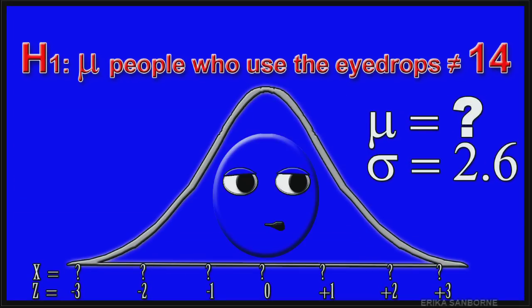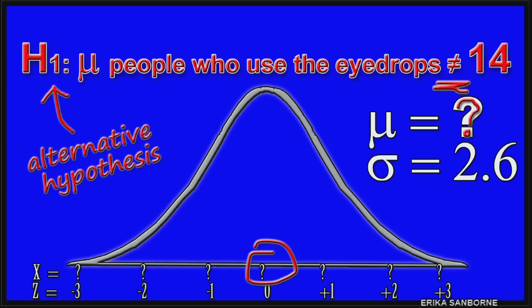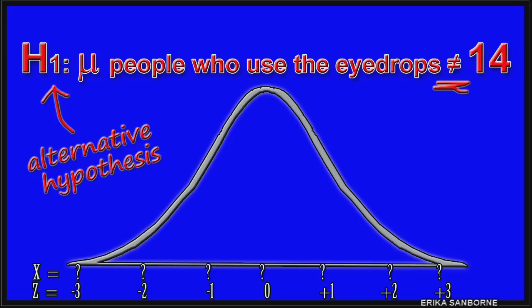The alternative hypothesis is that people who use the eyedrops do not blink like everybody else. People who use the eyedrops blink a different number of times per minute than ordinary people do. Notice there is not a lot of detail in this alternative hypothesis. In fact, all the alternative hypothesis is saying here is that people who use the eyedrops are different than ordinary people we already know about. The people who use the eyedrops have a population mean of something that is not 14.